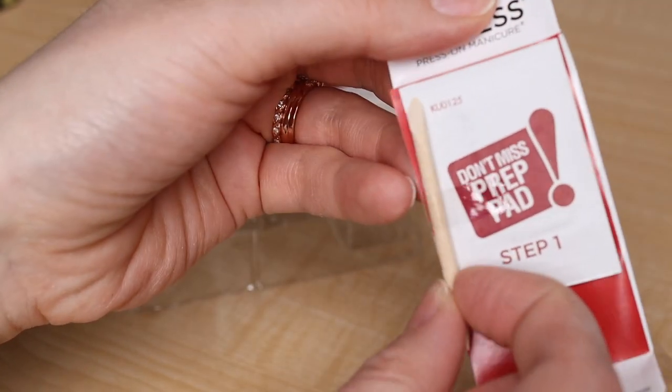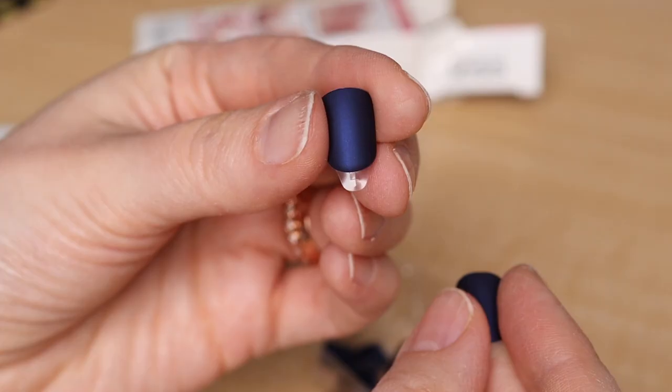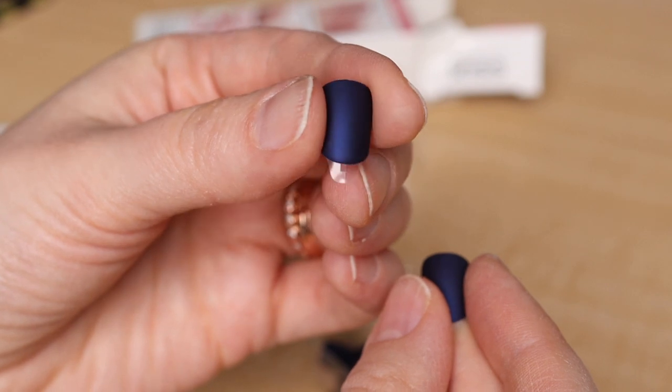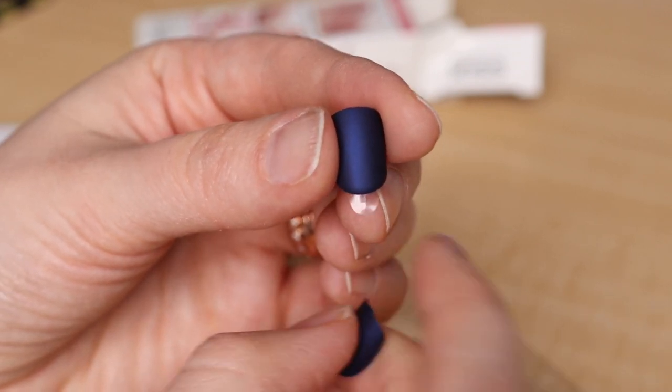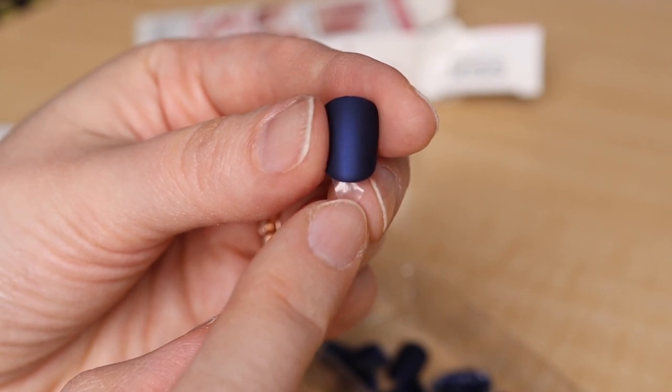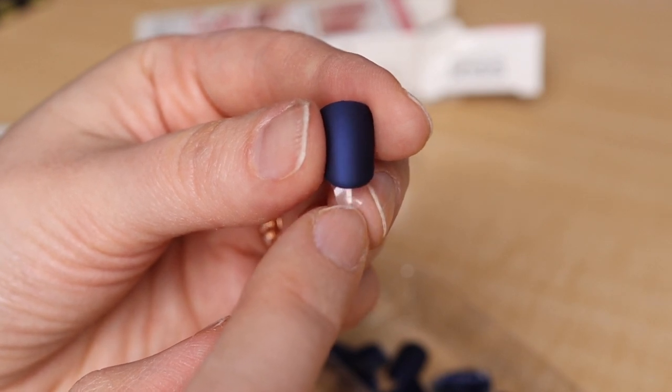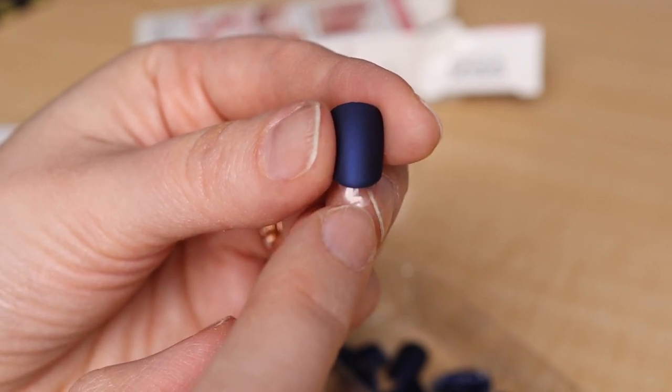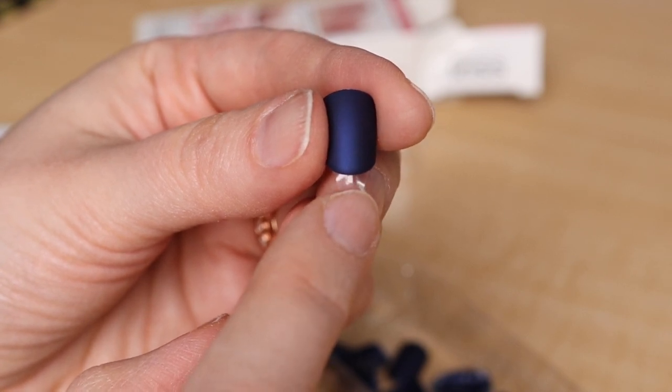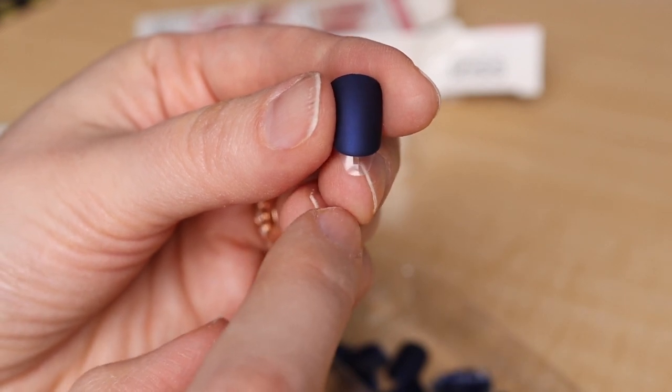We have the prep pad, a little cuticle pusher, the instruction manual. Nails feel like flexible plastic, not flimsy, but thin enough to feel pretty natural once you apply them. One handy thing is the little pull-off tab here has a size on it. These go usually from 0 to 11, and the smaller the number, the bigger the nail. So 0 is the biggest and 11 is the smallest.